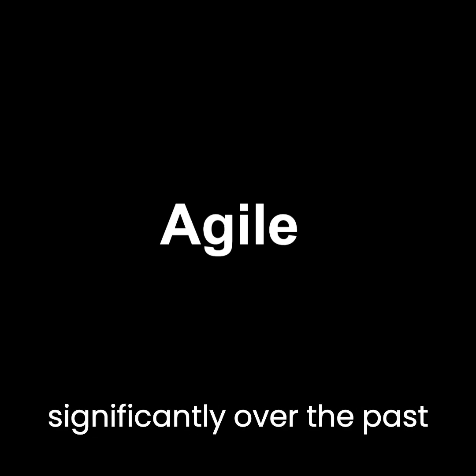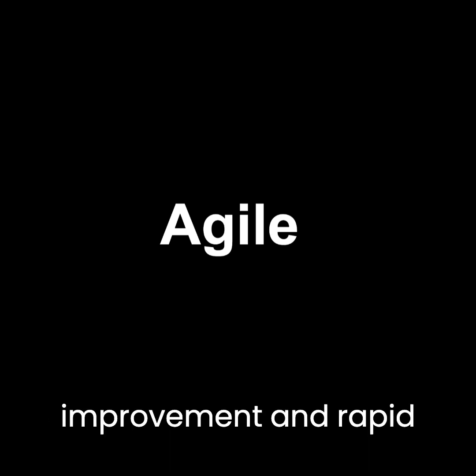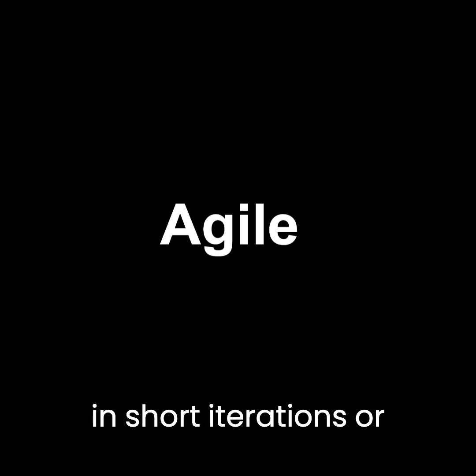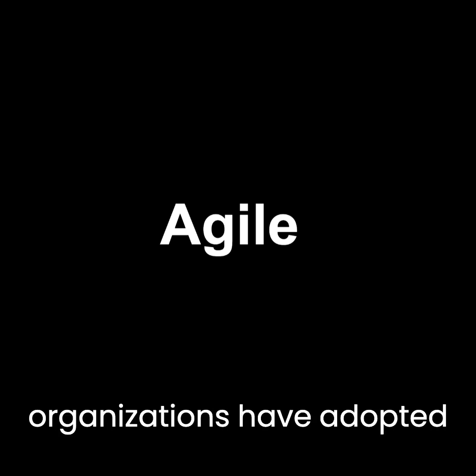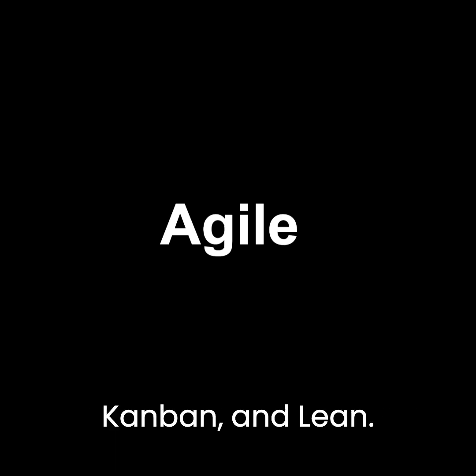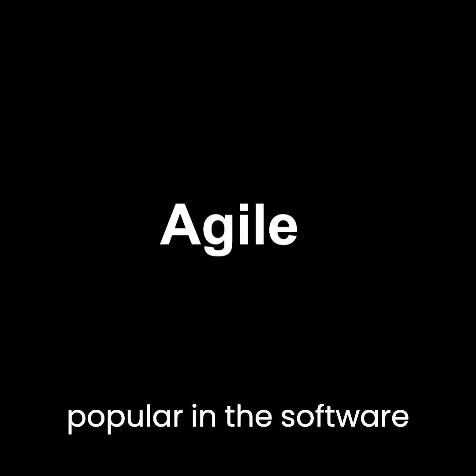Agile is currently the most popular methodology for software development. Its popularity has increased significantly over the past few years as it provides a flexible and iterative approach to software development that can adapt to changing requirements and customer needs. Agile methodology emphasizes collaboration, continuous improvement, and rapid delivery of working software in short iterations or sprints. It allows development teams to respond quickly to changes and feedback, delivering value to customers faster. Many organizations have adopted Agile and its various frameworks such as Scrum, Kanban, and Lean. Agile is particularly popular in software development but has also been applied successfully in other industries such as marketing, finance, and healthcare.